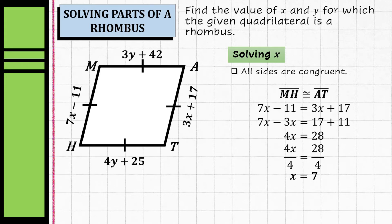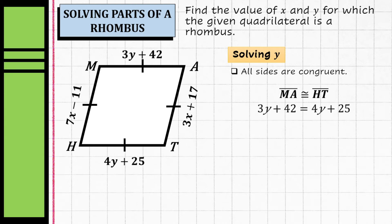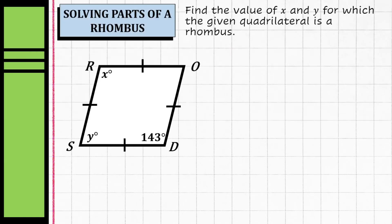Now let's solve for the value of y. We also use the property that all sides are congruent, so side MA is congruent to side HT. Substituting: 3y plus 42 equals 4y plus 25. Rearranging: 3y minus 4y equals 25 minus 42, giving negative y equals negative 17. Dividing both sides by negative 1, y equals 17.